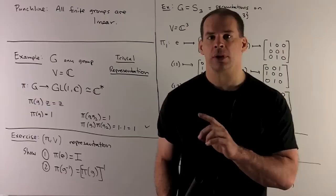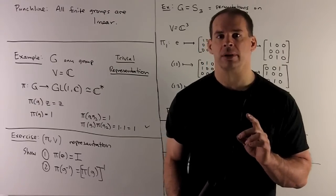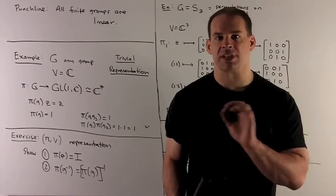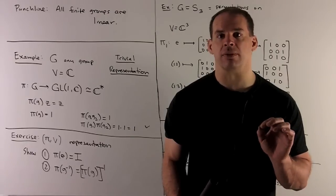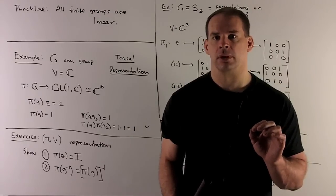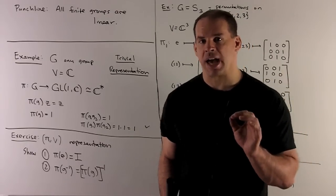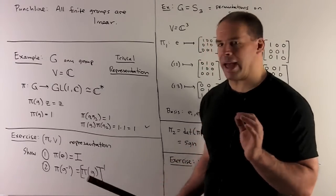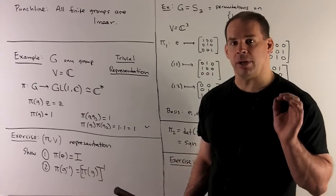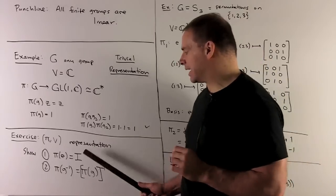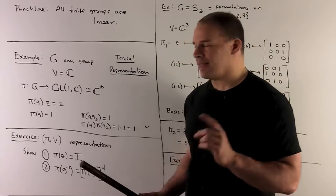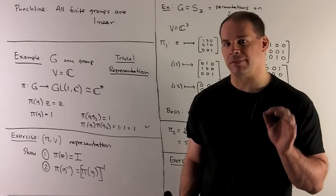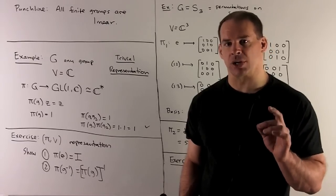As a group action, we have the trivial group action — for any group element, it's going to take any complex number and send it back to itself. Exercise: let (π, V) be any representation. Show that π on the identity element of the group has to go to the identity matrix, and then show that π(g⁻¹) is going to be equal to the inverse of the matrix π(g).